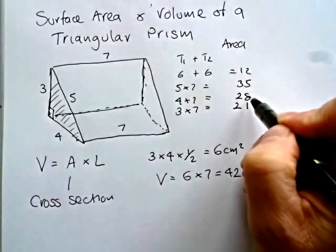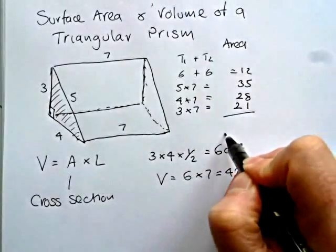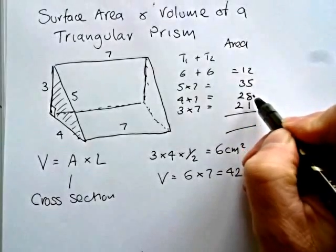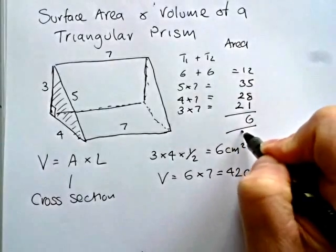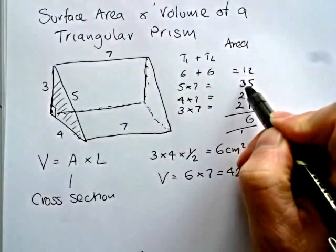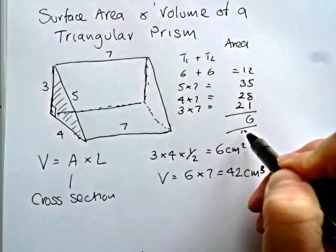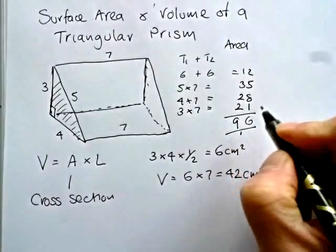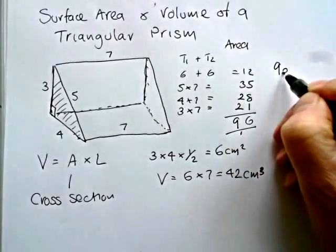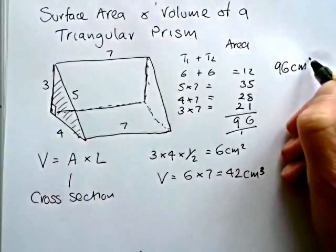And then we've got to add 12, 35, 28 and 21 to get the full answer. 7 and 8 is 15, and 1 is 16. Carry the 1. 1 and 3 is 4, 4, 2, 6, 8 and 1, 9. So the surface area then is 96 centimeters squared.